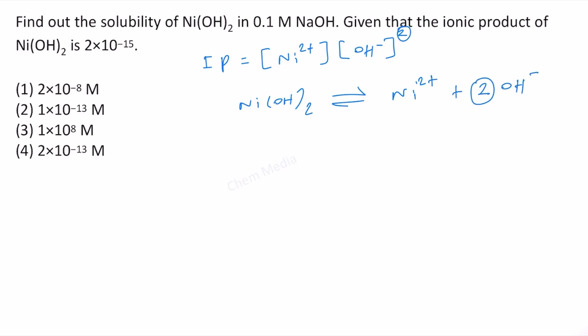The stoichiometric coefficient here is 2, that's what we put it here. Now if the molar solubility of nickel 2 plus is s, then the molar solubility of OH minus is 2s.